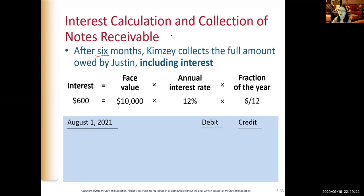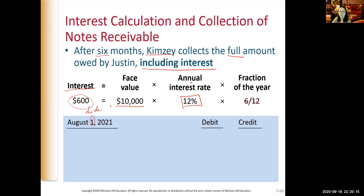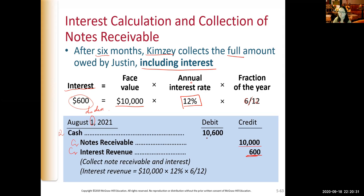After six months, Kinsey collects the full principal of $10,000 plus interest. The interest is $10,000 × 12% × 6/12 = $600. So on August 1st, the due date, we credit interest revenue for $600, credit notes receivable for $10,000 (since the note is no longer outstanding), and debit cash for the total of $10,600 — principal plus interest.